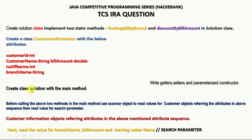In the Solution class we need to create the main method, then use a Scanner object to read values for the above attributes in sequence. We also need to read the search parameters: branch name, bill amount, and starting letter of name. You can skip getter and setter methods if you don't have enough time and directly access the variables.